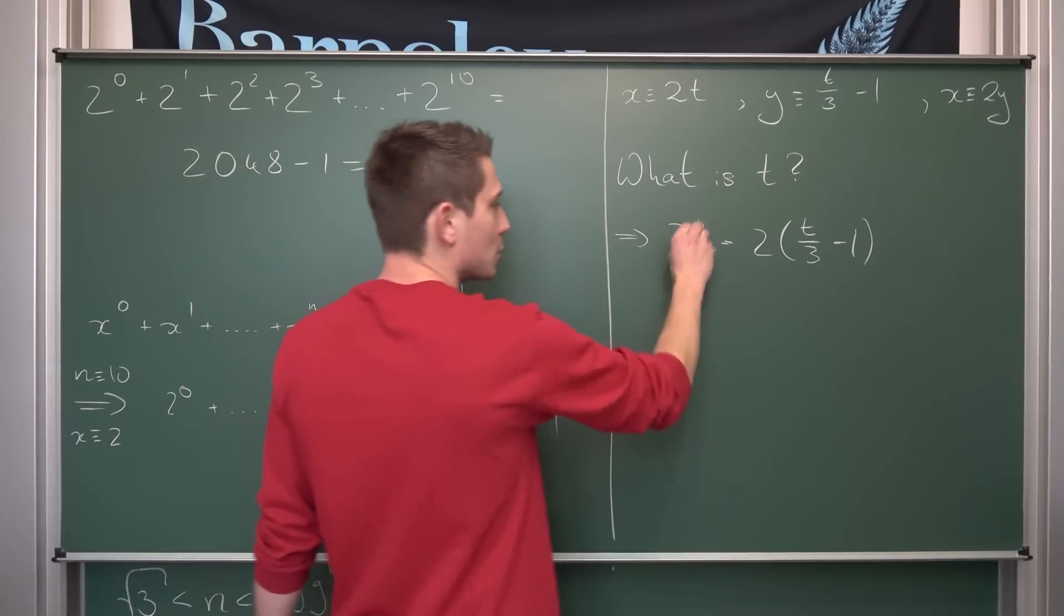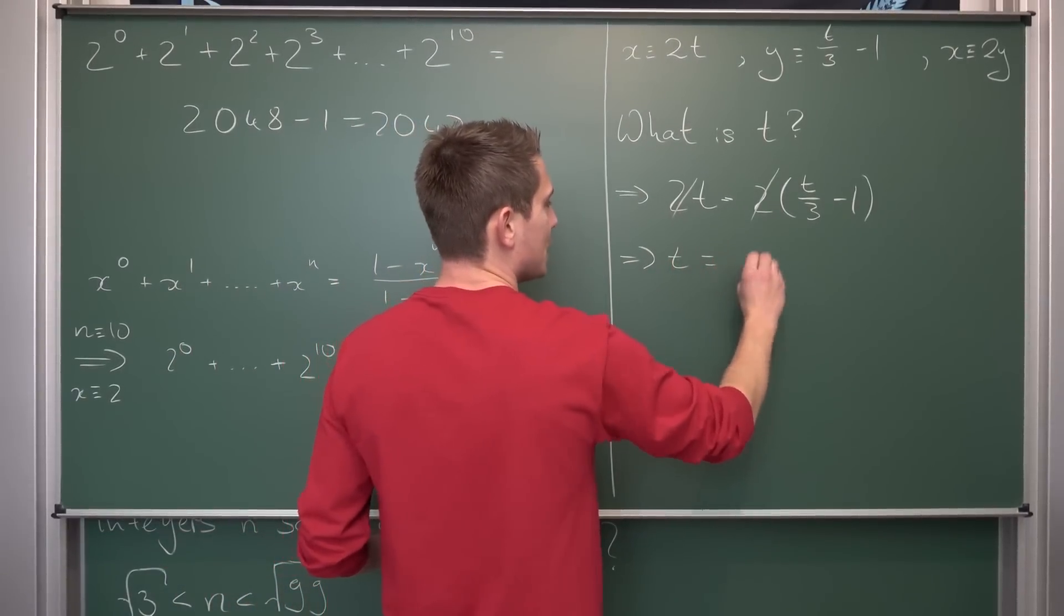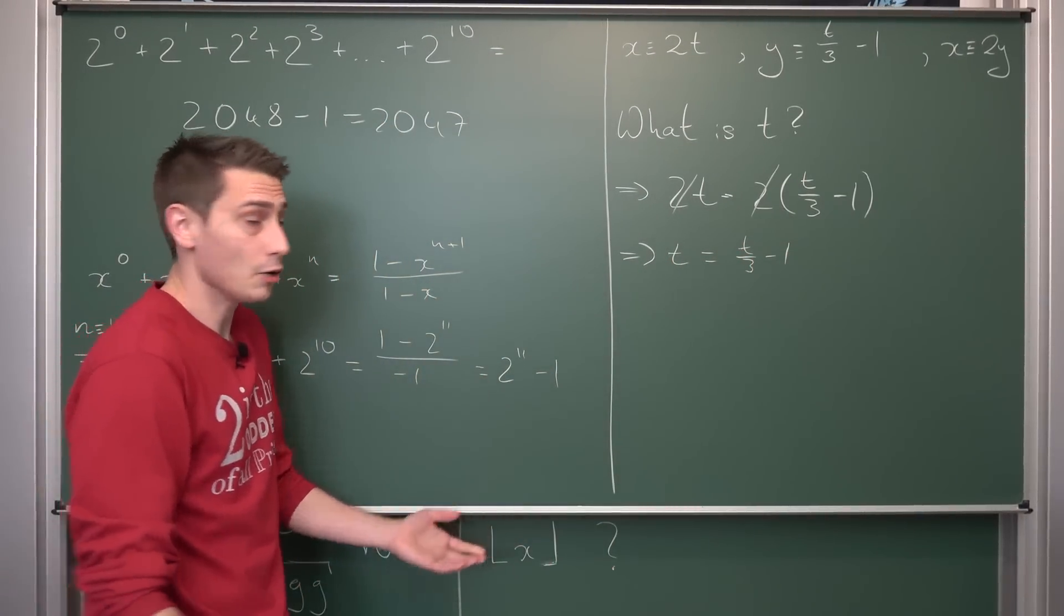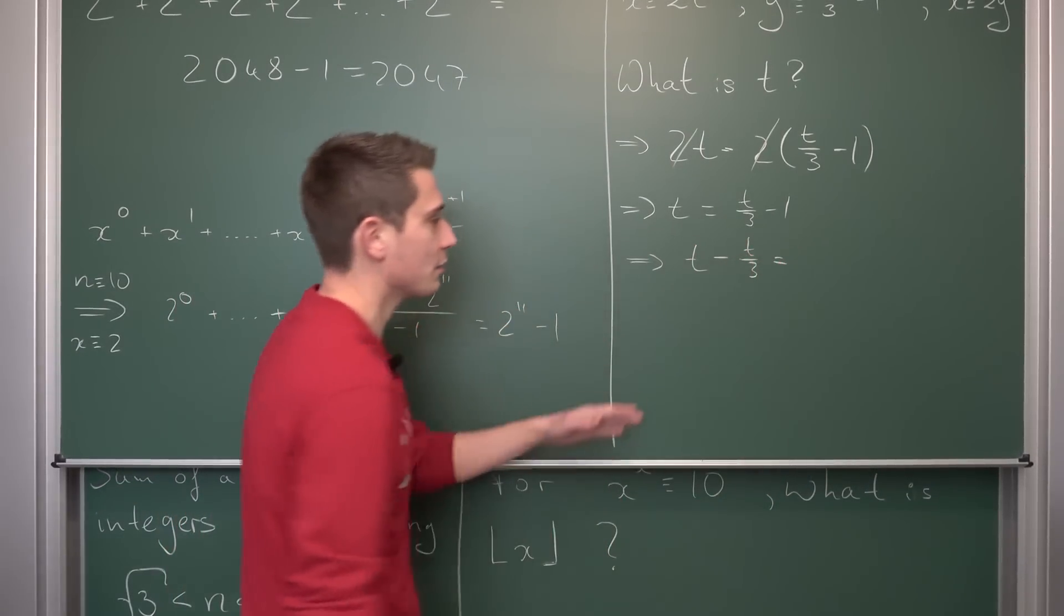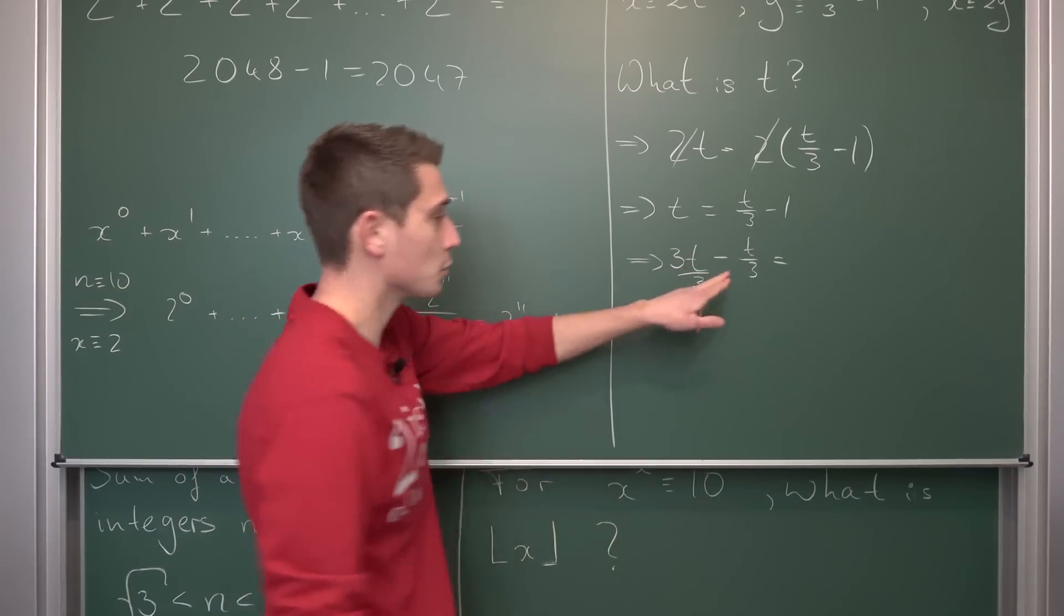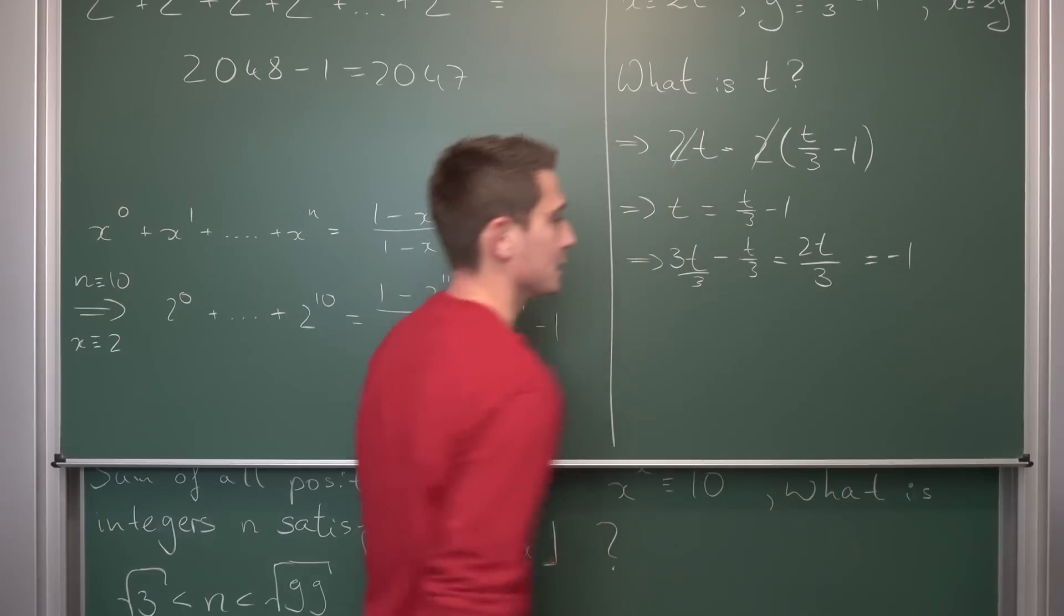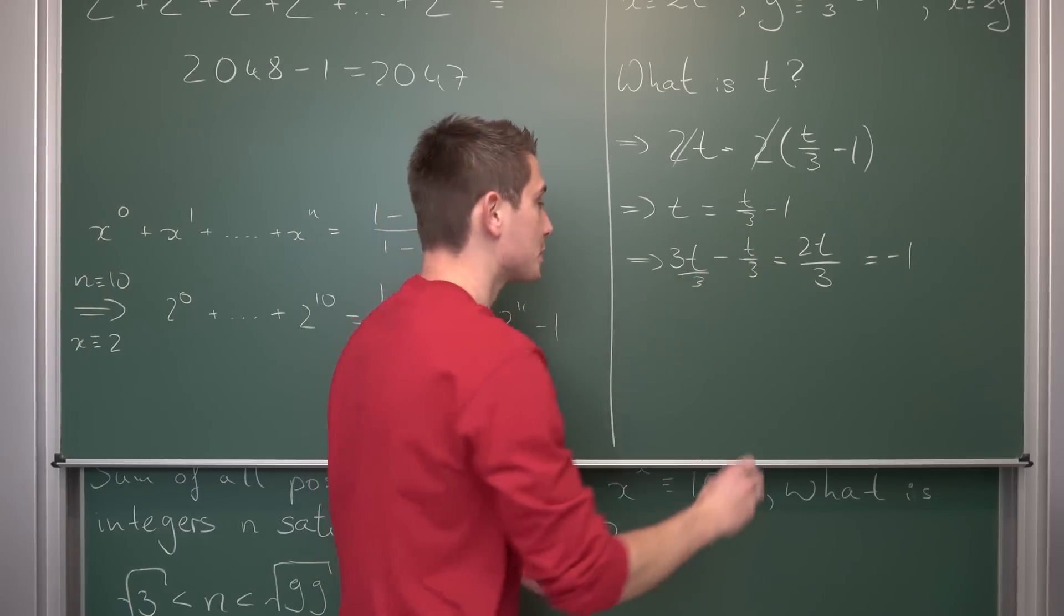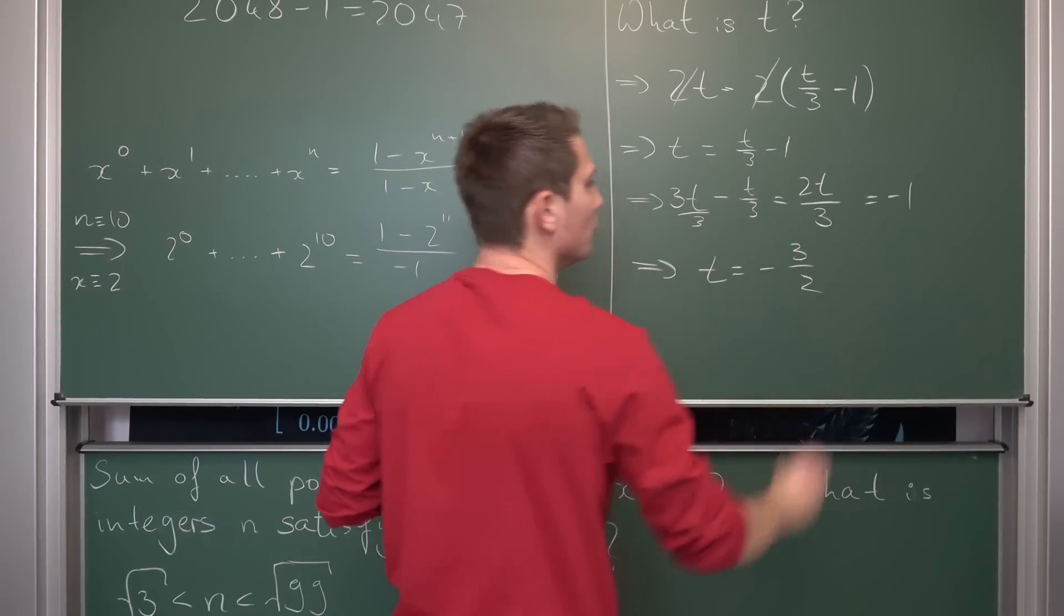2 is not equal to 0, we can just divide both sides by it, leaving us overall with t being hence nothing but t over 3 minus 1. We can subtract t over 3 on both sides. So t minus t over 3 is hence nothing but expanding this t by 3 over 3 resulting overall in 2t divided by 3 being hence nothing but negative 1. And now multiplying both sides by the reciprocal of 2 thirds is going to result overall in t being nothing but negative 3 over 2 and hence we are done.